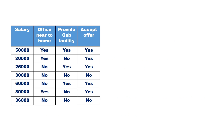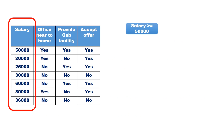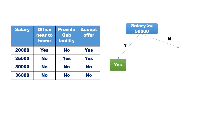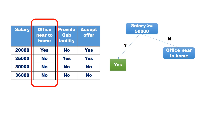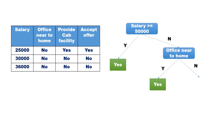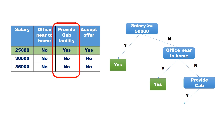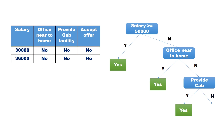Consider the set of training examples shown here. Taking salary as the root attribute, we check if salary is greater than 50,000. Three records satisfy the yes condition — all three have class label accept offer, so that child node becomes a leaf labeled accept. The remaining four records go to the no branch. Taking office near to home as the next splitting attribute, one record with class label accept satisfies the yes condition, making that a leaf. The remaining three records go to no. Taking provide cab facility as the next splitting criterion, one record satisfies yes with class label accept, and the remaining two with the no outcome both have class label no, so both become leaf nodes.